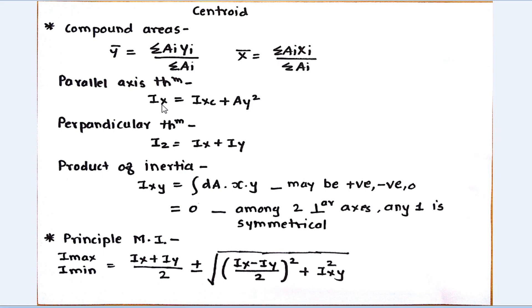Next is parallel axis theorem. Ix equals IxE plus A into Y-bar. Here Ix is the moment of inertia of the body at center, A is the area of the body, and Y is the perpendicular distance between two axes—the center axis and the axis for which we want to calculate the moment of inertia.